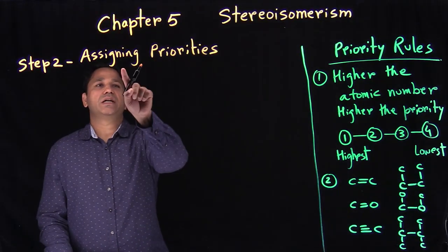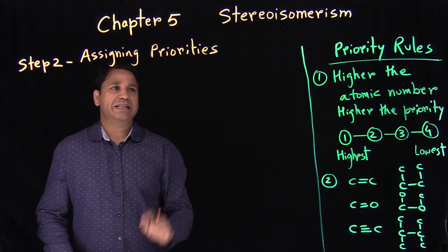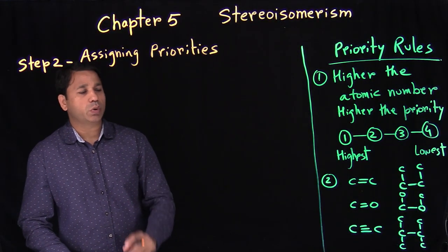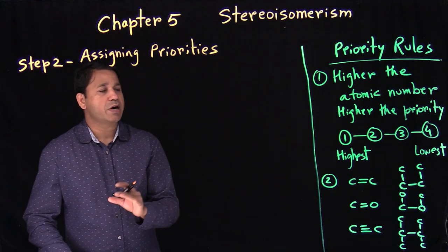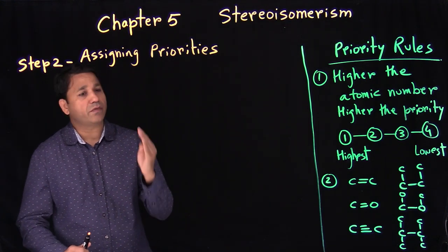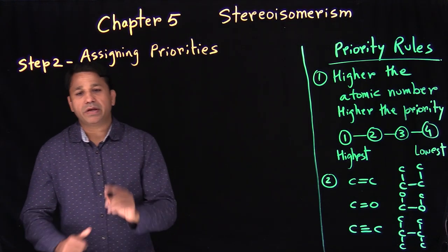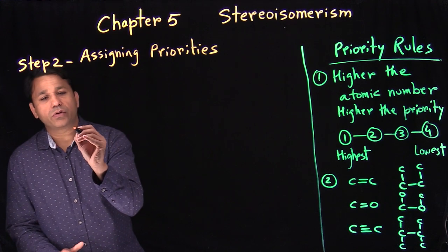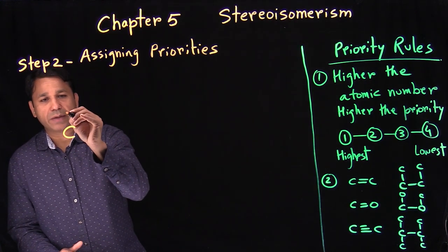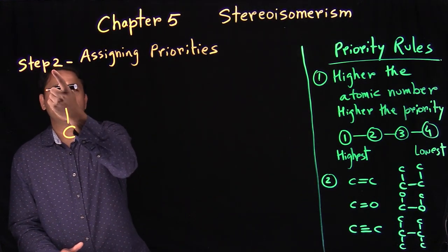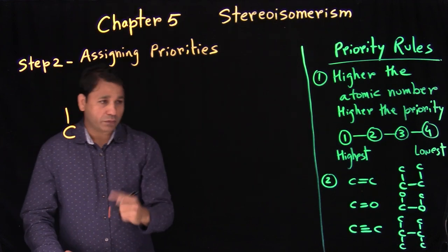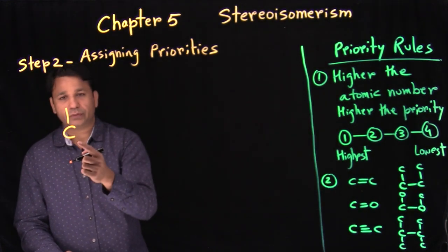Step two is assigning priorities. When we're talking about priorities, we have four groups. Once you find a stereogenic carbon, it has four groups attached to it. If you want to do step two, you still have to do step one first and then go to step two.